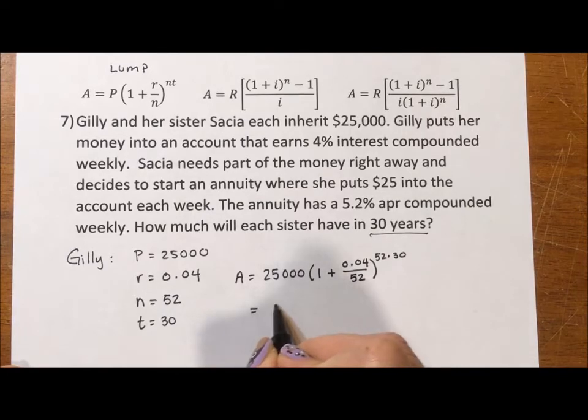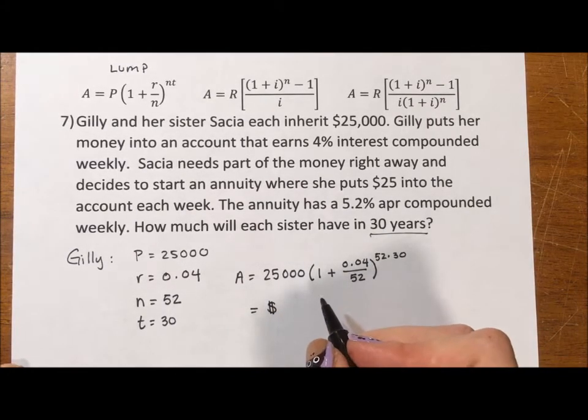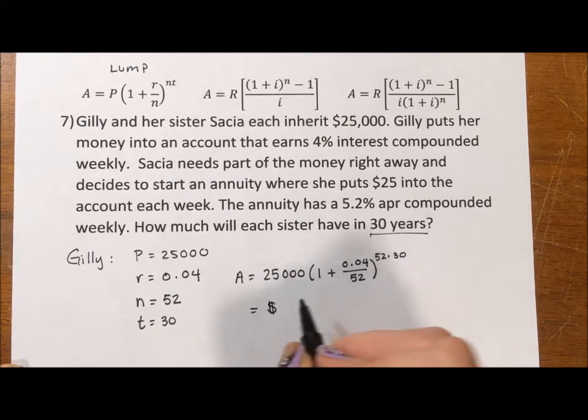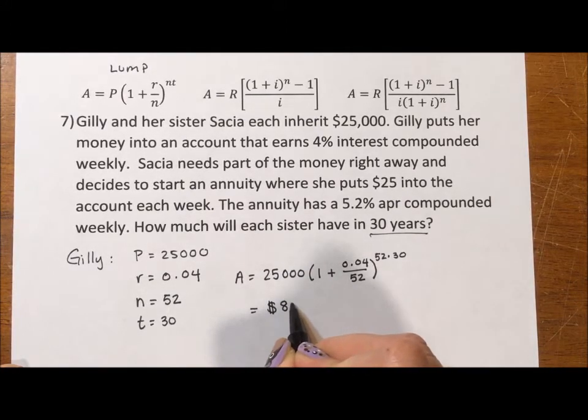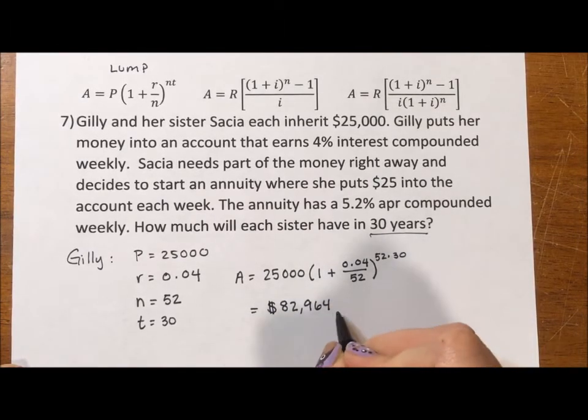If we throw this into a calculator, we find out that at the end of 30 years, Gilly has earned, hasn't earned, has in her account $82,964.64.